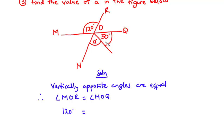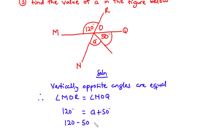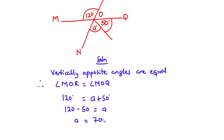Since angle MOR equals angle NOQ, angle MOR is 120 degrees. So 120 equals angle NOQ, which is A plus 50 degrees. To find the value of A, we transpose 50 to the left-hand side: 120 minus 50 equals A. Therefore, A equals 70 degrees.